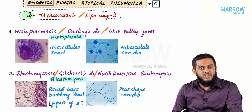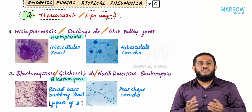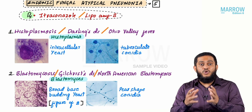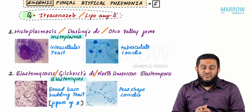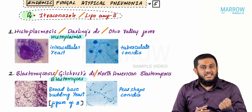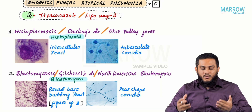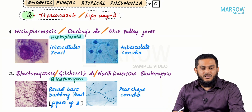The only thing in which they differ is lab diagnosis. In lab diagnosis, since they are dimorphic fungi, you have to show the yeast form and the mold form for each of the five fungi.